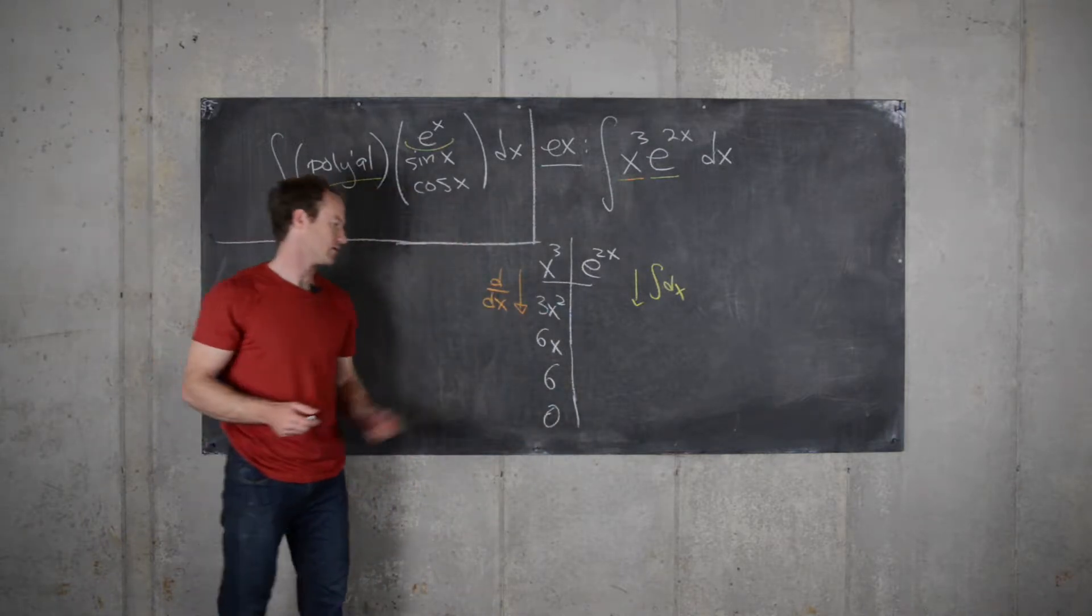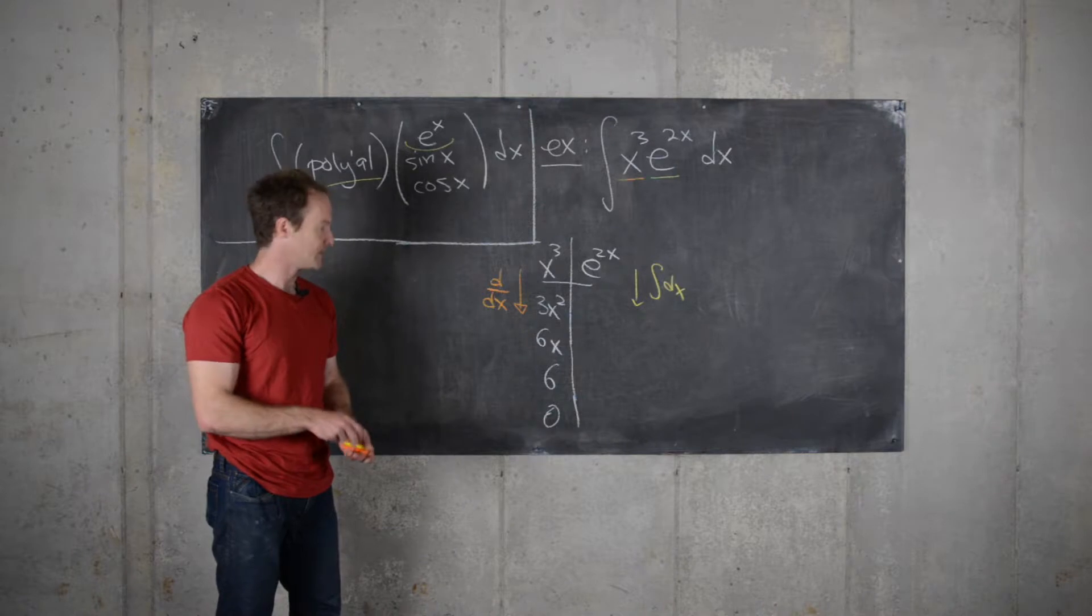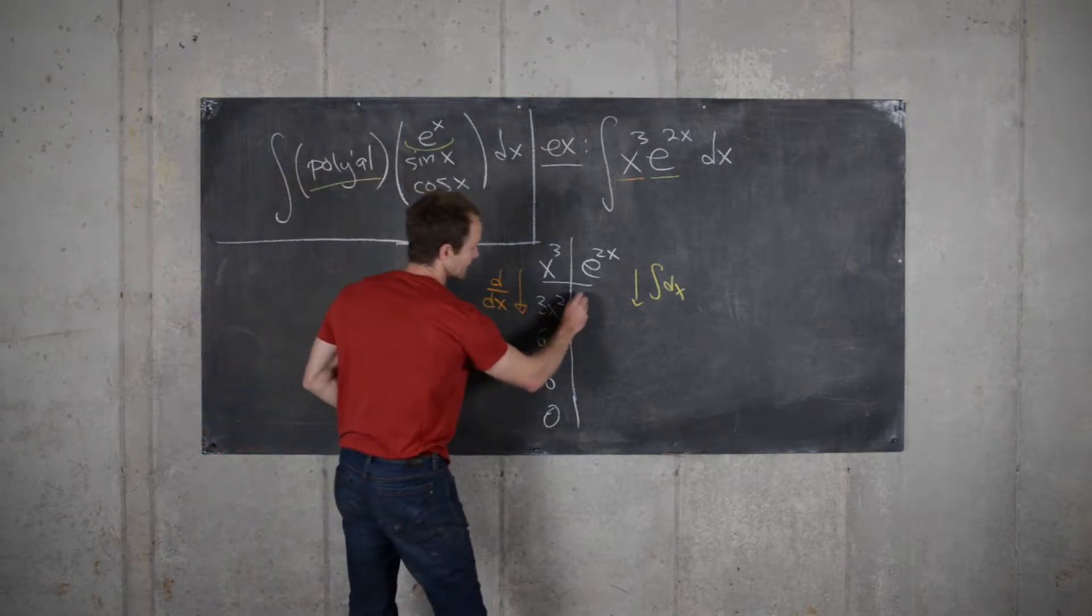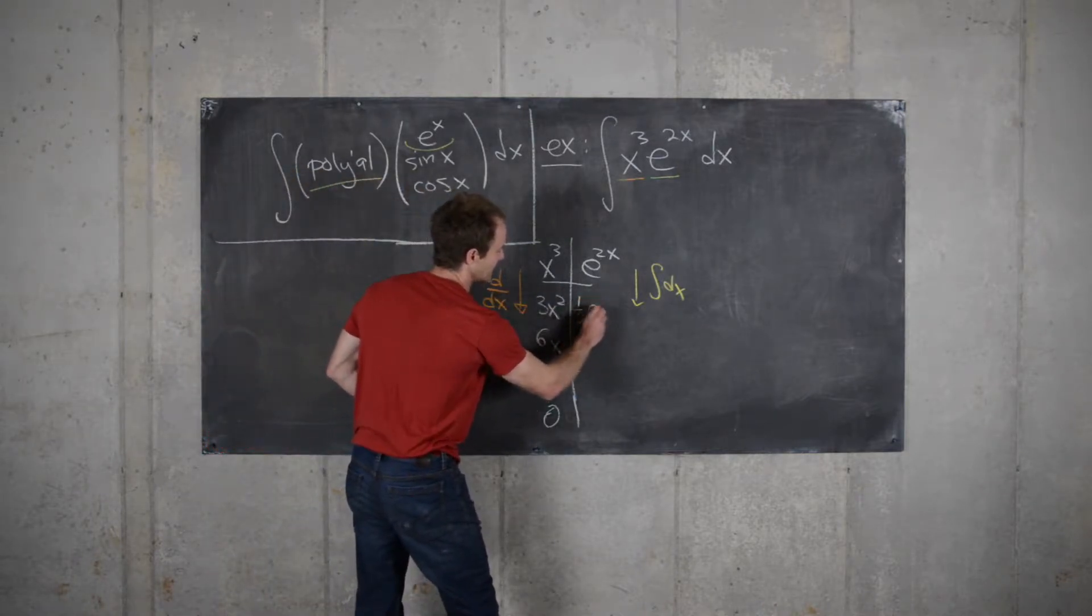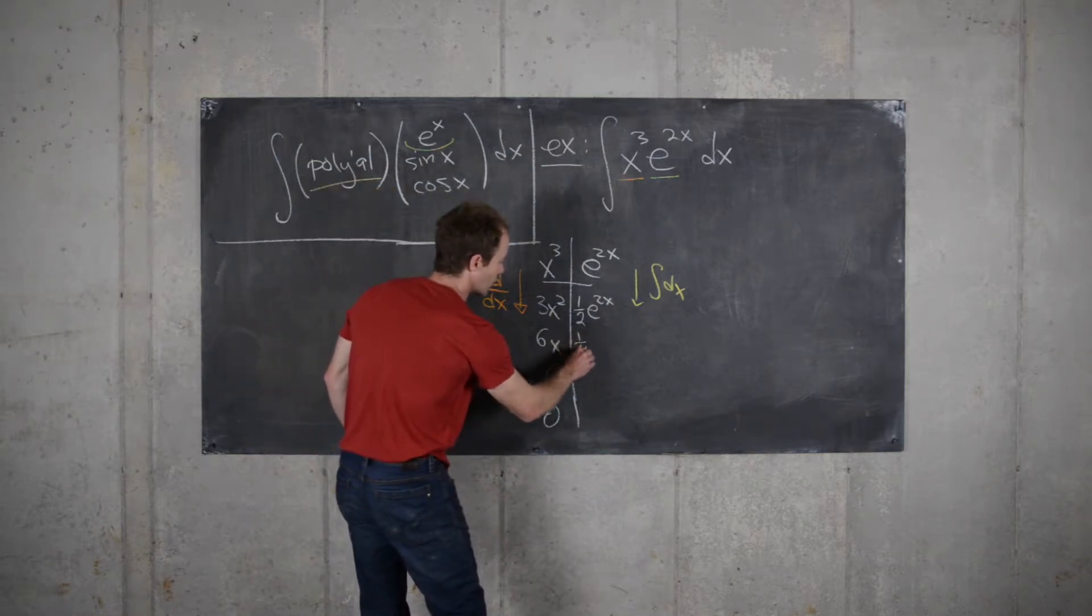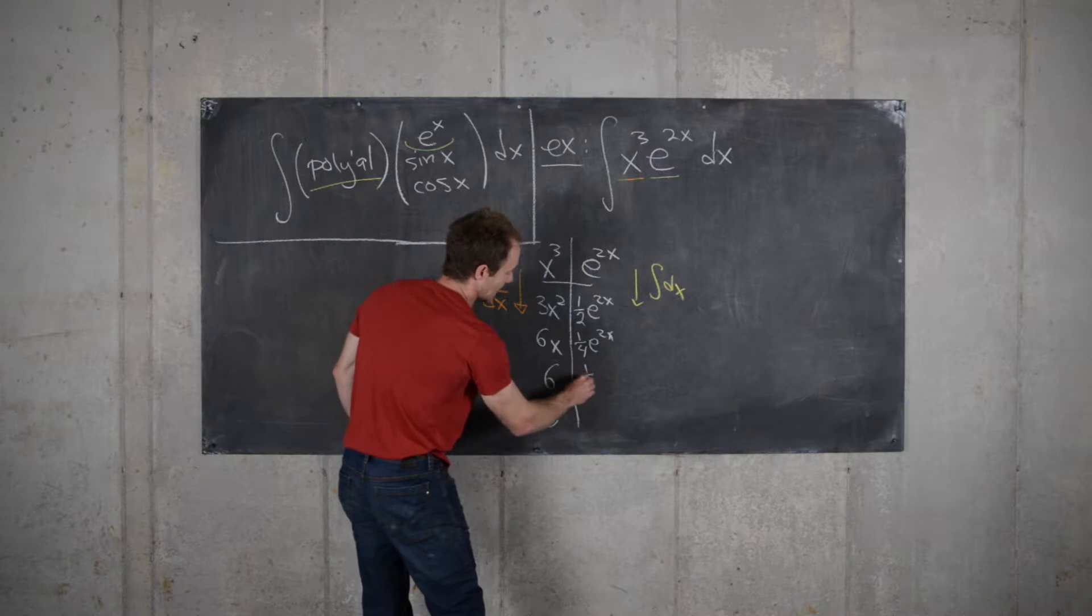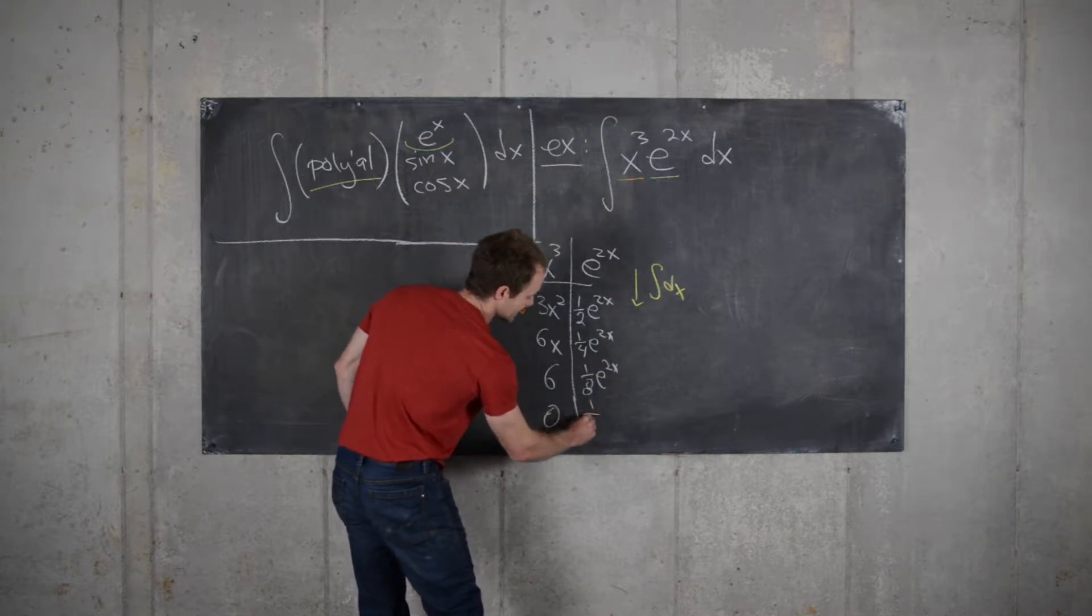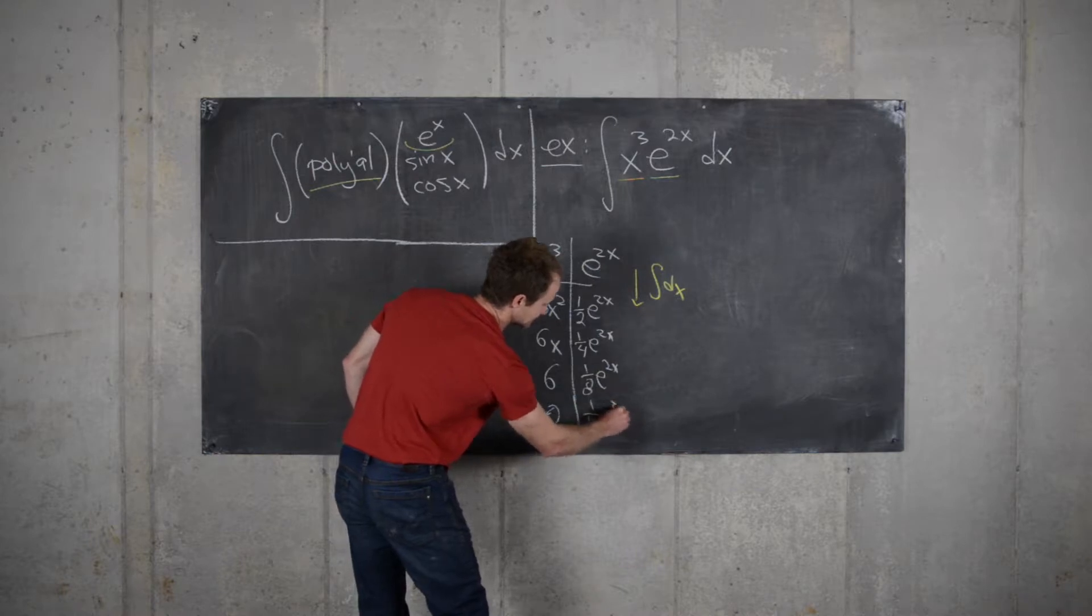Now we'll take anti-derivatives down here. We'll get 1 half e to the 2x, and then we'll get 1 quarter e to the 2x, 1 eighth e to the 2x, and 1 sixteenth e to the 2x.